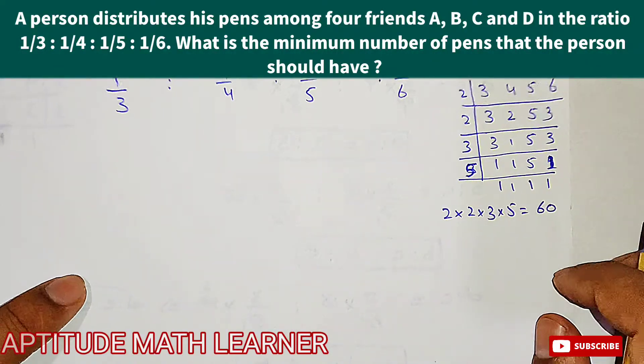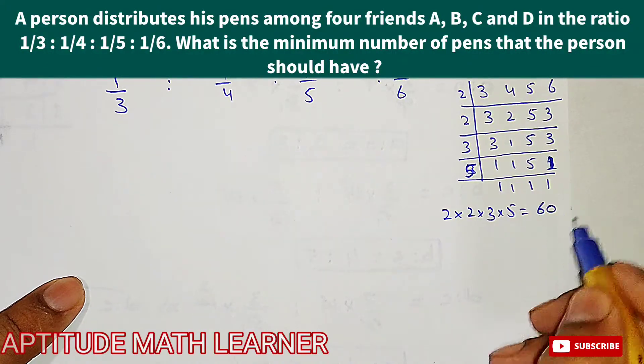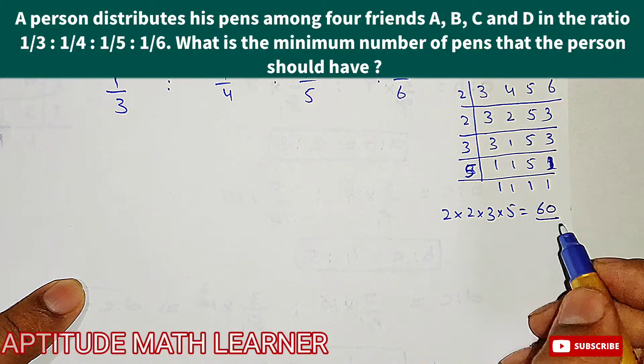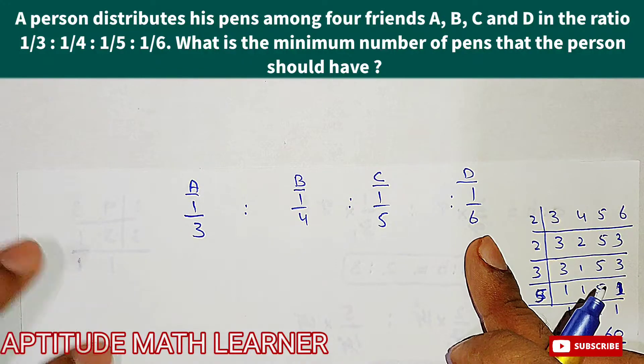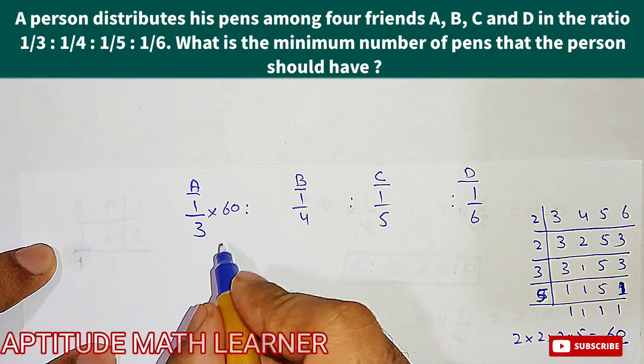So we have just found out the LCM and we got the answer, that is 60. This was the LCM. Now this 60 is to be multiplied with all these four fractions, so we multiply it by its LCM, that is 60.